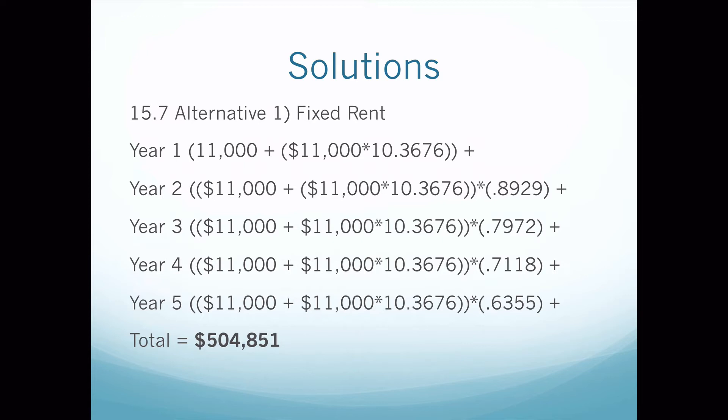I'm going to walk through the math on a couple of these, and hopefully you'll get the answer of $504,851. If you do $11,000 times 10.3676 plus $11,000, and then when you get that answer you add it to the answers of years 2 through 5. On year 2, you take $11,000 times 10.3676, add $11,000 to it, and then multiply it by 0.8929.